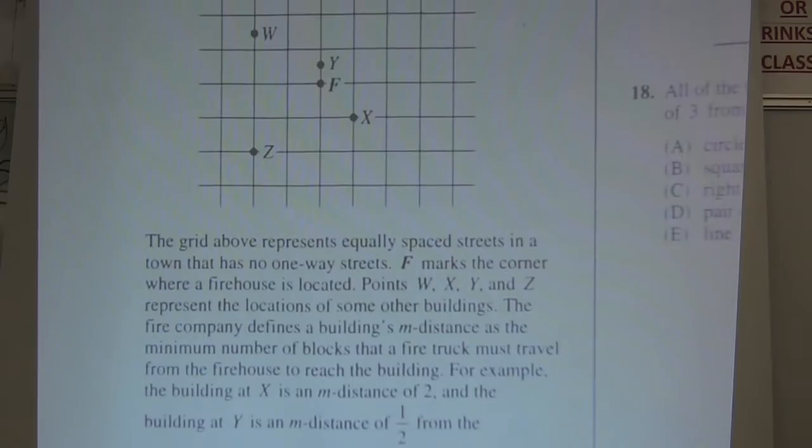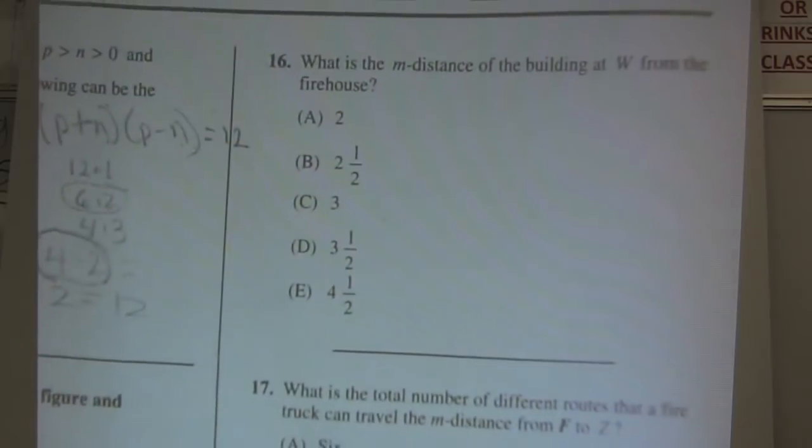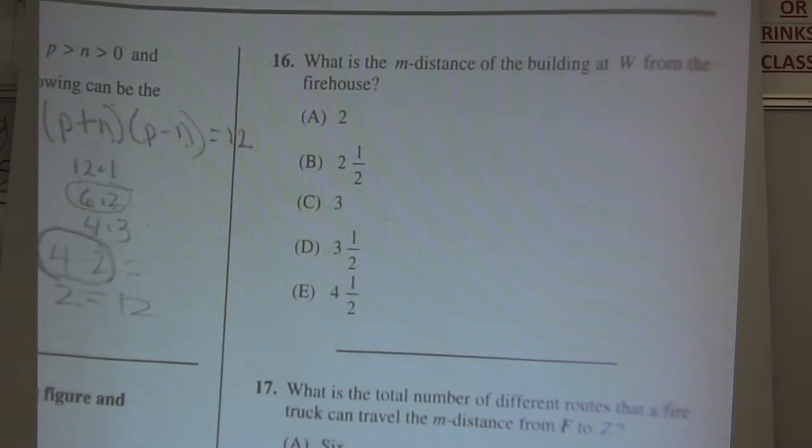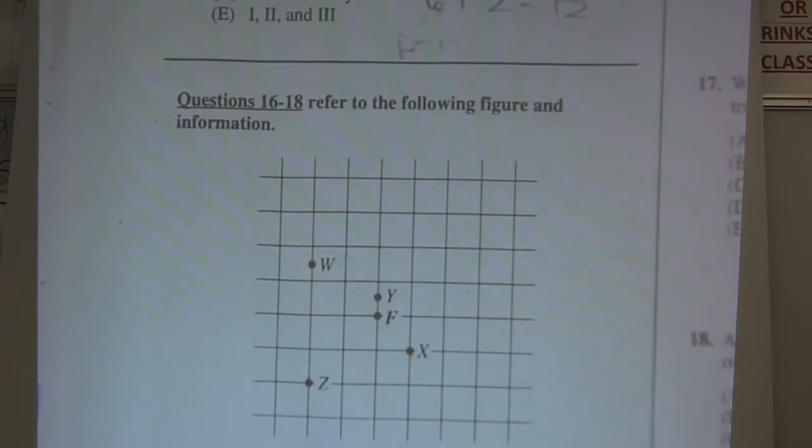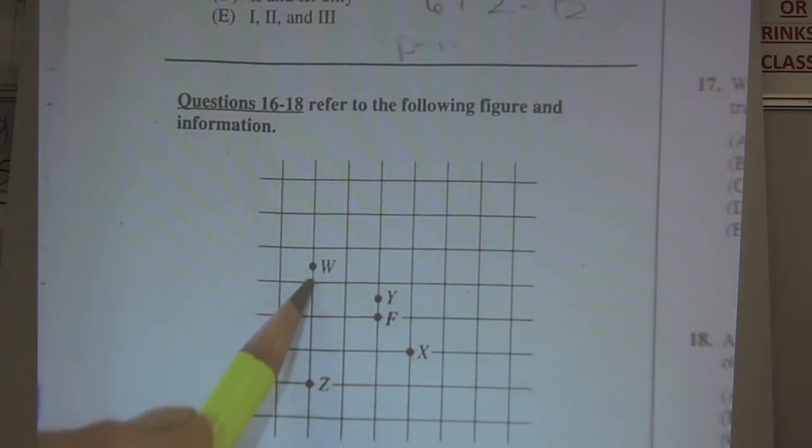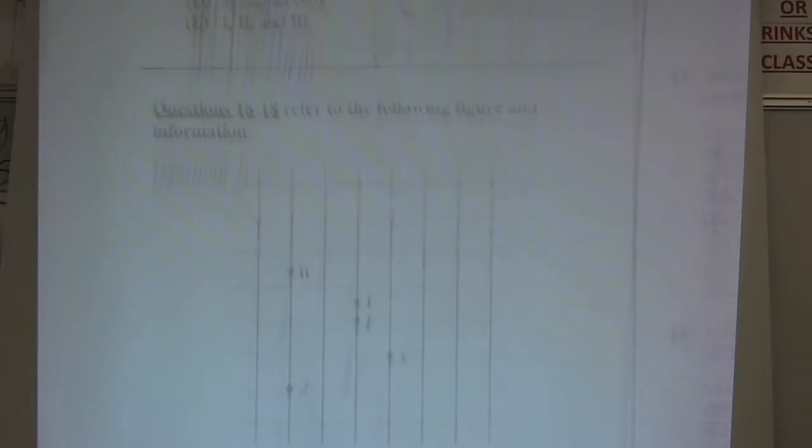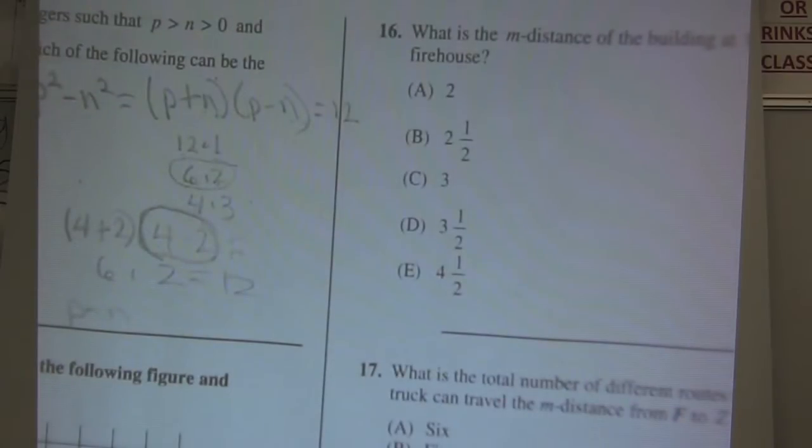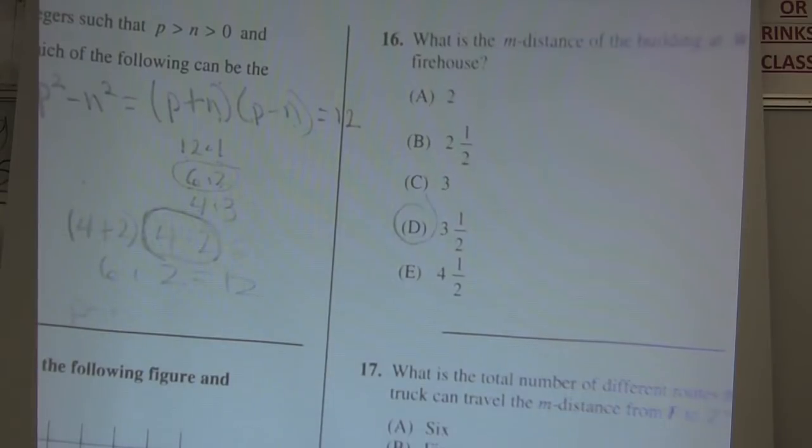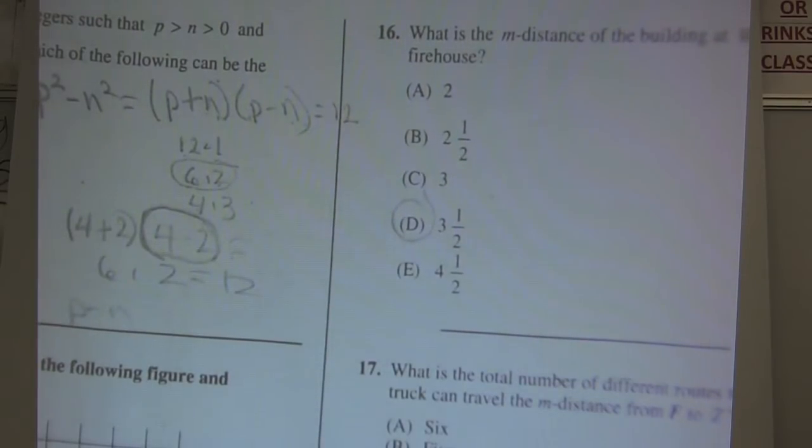I'm going to move over to 16 and then come back to this chart. 16 says: what is the m-distance of the building at W from the firehouse? So I'm going to go from W to the firehouse right here. Let's see, that's a half plus 1 plus 2 plus 3. Looks like three and a half. So 16 is choice D. Nice and easy.